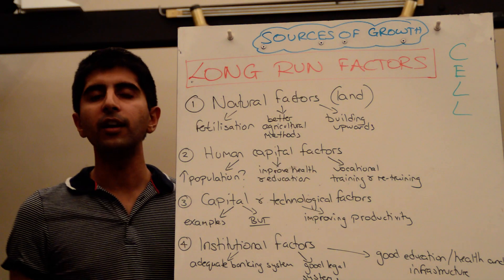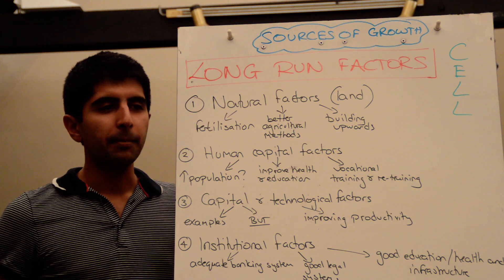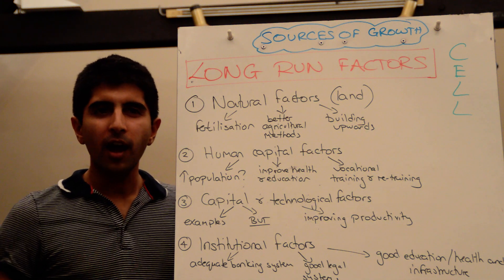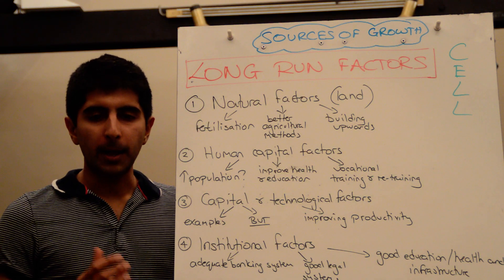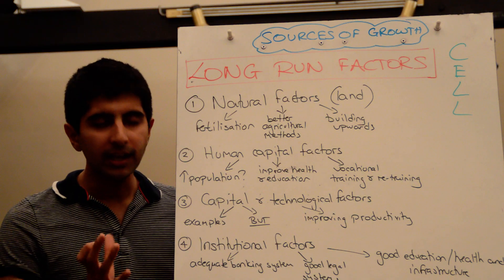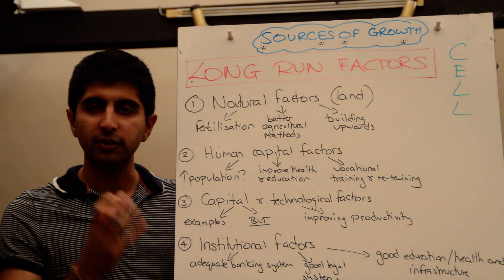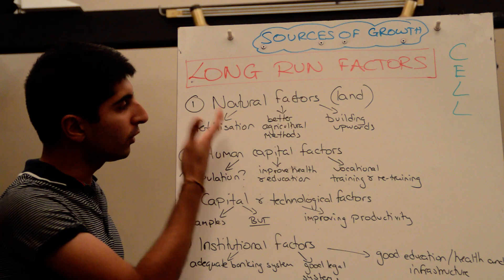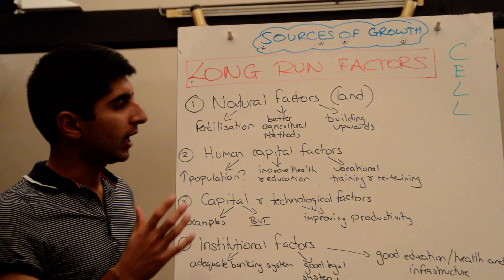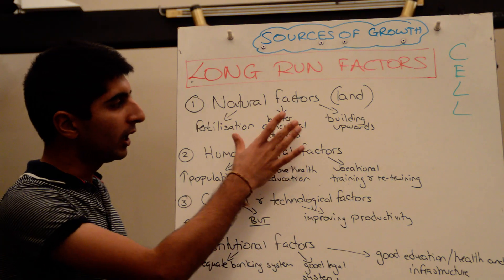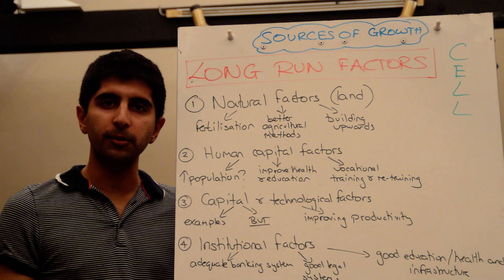It's very hard for a country to increase the quantity of its land. A lot of countries have tried by looking at artificial land — building artificial islands or trying to find ways to be more efficient with the use of land. But probably the better way is to improve the quality of land, and that can be looking at fertilisation techniques to get more out of the soil and land you have, and using better agricultural methods to extract as much as possible from the earth.